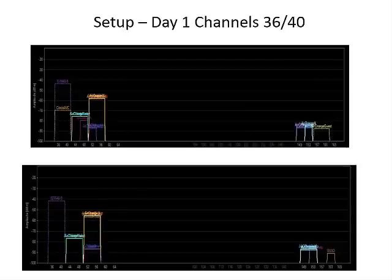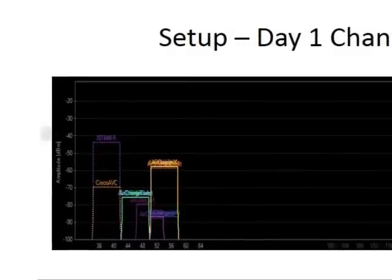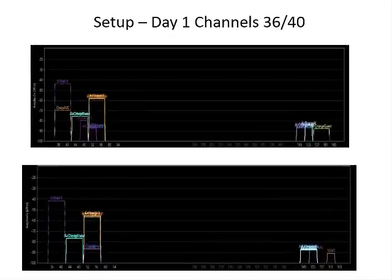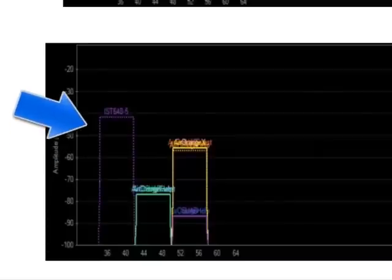During our setup, we monitored channels 36 and 40 in the 5 GHz frequency band with MetaGeek Insider. The top graph shows our initial scan of the 5 GHz spectrum. This scan showed that our test channel, IST648-5 in purple, was interfering with another channel, Cisco AVCE, on the same frequencies. So we made adjustments, which are reflected in the bottom graph, which now shows no interference with our 40 MHz channels.